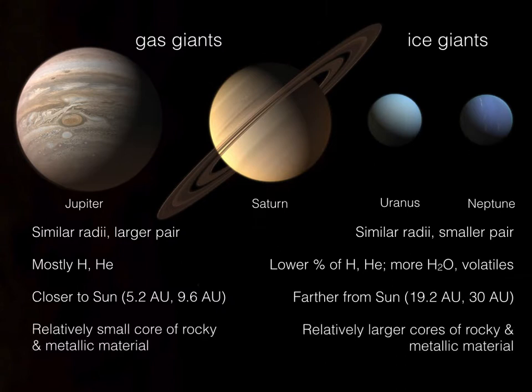At the centers of these planets, they both have rocky cores — it's just a question of how large they are relative to the planet as a whole. In the case of Jupiter and Saturn, their cores are relatively small compared to the overall size of the planet. Whereas in the ice giants, we have relatively larger cores. All four cores for both sets of planets are composed of the same kinds of rocky and metallic material mix.